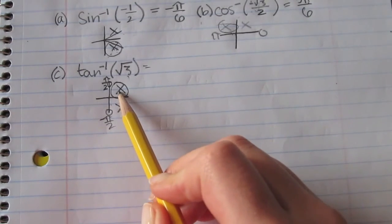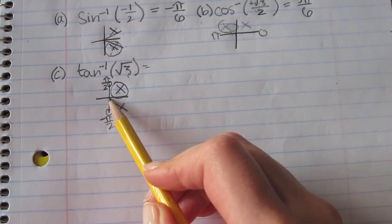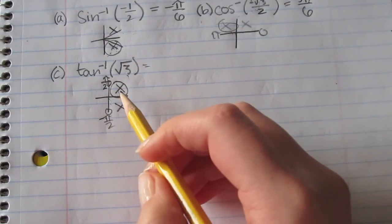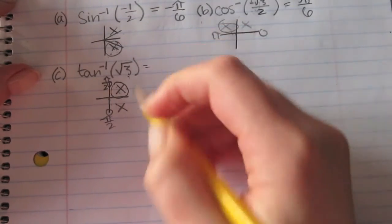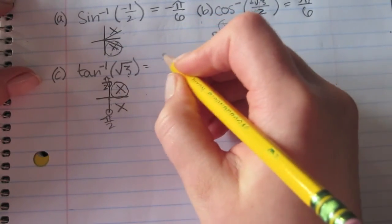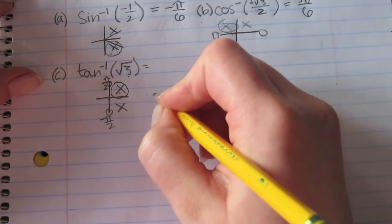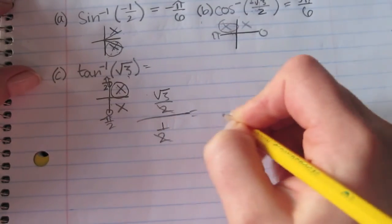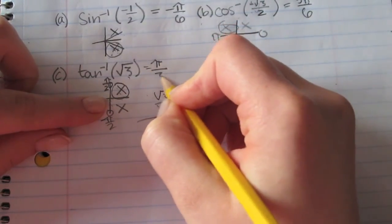Tangent is sine over cosine, so sine is square root of 3 over 2 at π over 3, and cosine at π over 3 is 1 half. Square root of 3 over 2 divided by 1 half equals square root of 3. I'll show that really quick: square root of 3 over 2 divided by 1 half, the 2's cancel out and you get square root of 3, at π over 3.